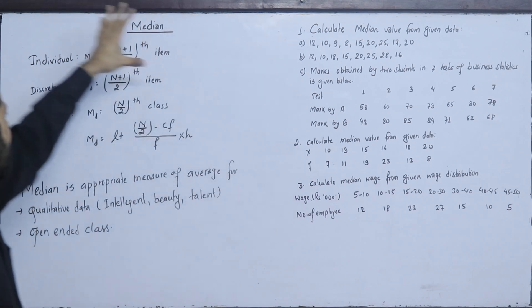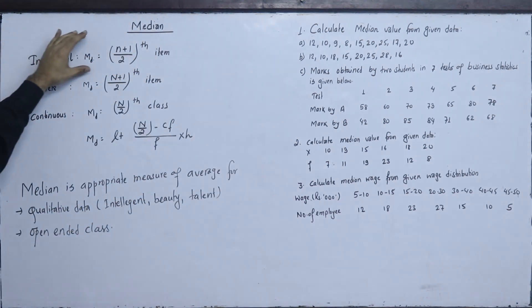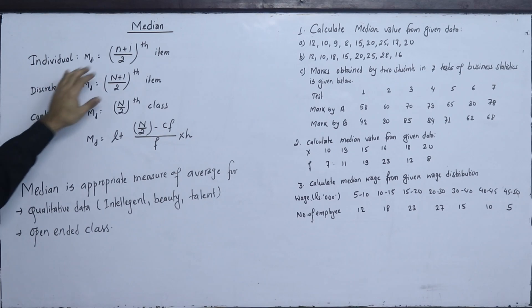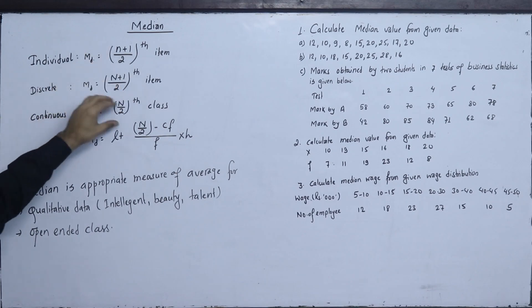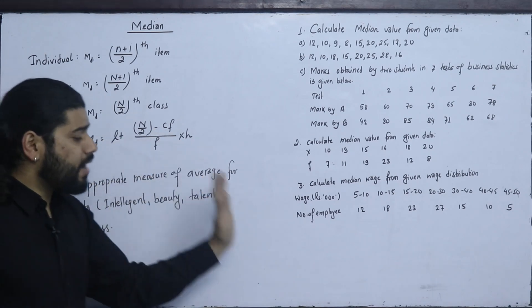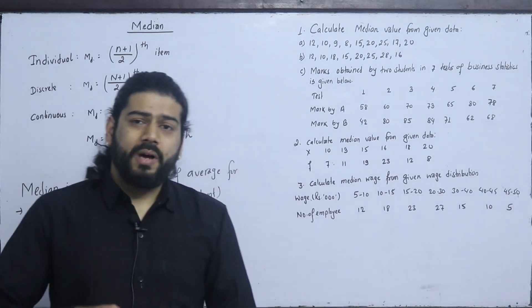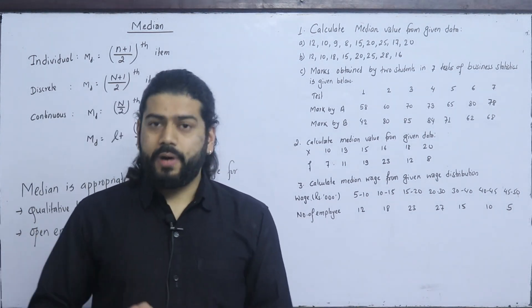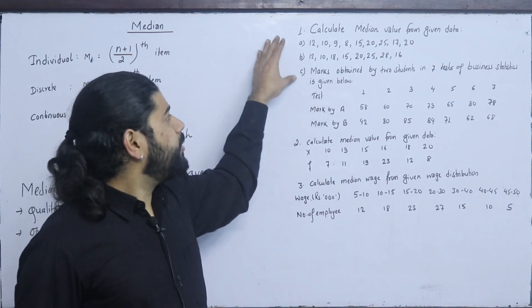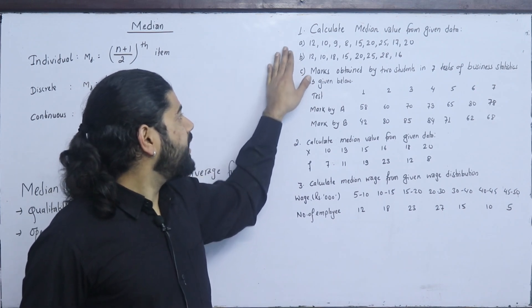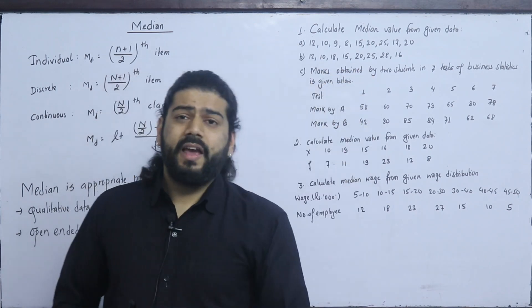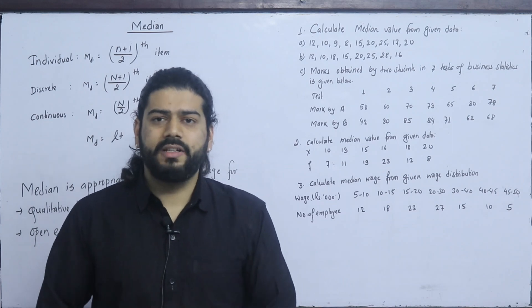The first question involves the individual series. In the individual series, the median is equal to the (n+1)/2 th term. What does median mean? It refers to which term or item is in the middle. We need to arrange the data in ascending or descending order to find this.